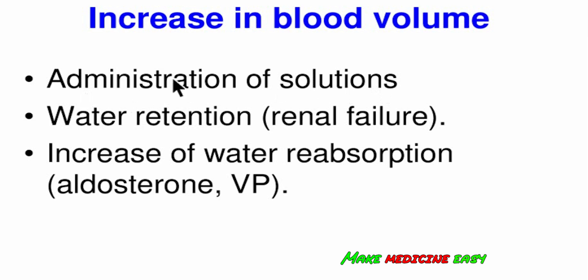But if there is water retention due to renal failure, the effect of increased blood volume on blood pressure will be chronic. Patients with chronic kidney disease have arterial hypertension. Increased water reabsorption due to hormone release — aldosterone or vasopressin — can also result from endocrine diseases, which leads to arterial hypertension.